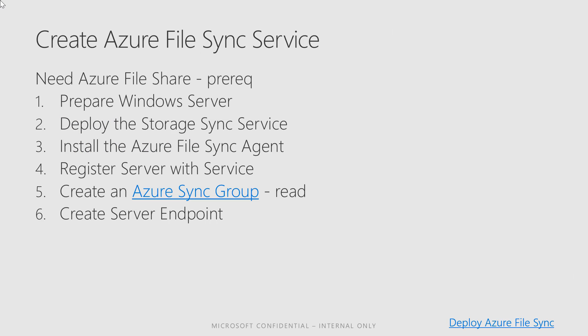Creating an Azure File Sync service — here is the step-by-step process. You have a prerequisite that you need an Azure file share. You then prepare the Windows Server, deploy the Storage Sync Service, install the Azure File Sync agent, register the server with the service, and create an Azure Sync Service group. Finally, you create an Azure Sync Group and create a server endpoint.